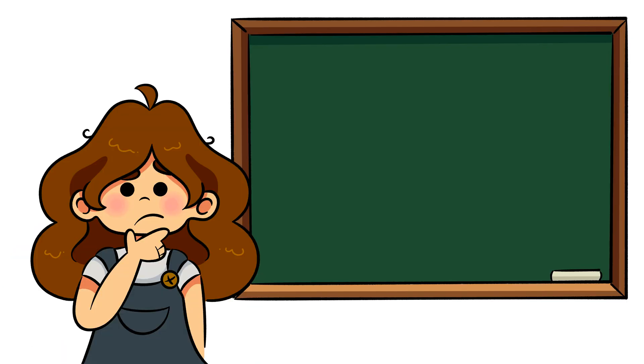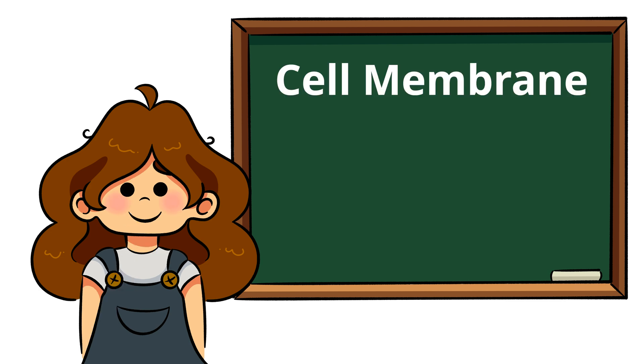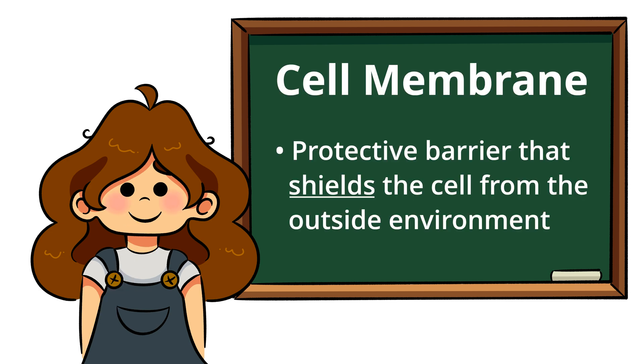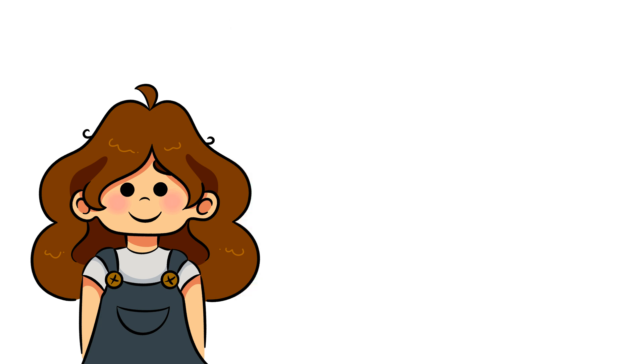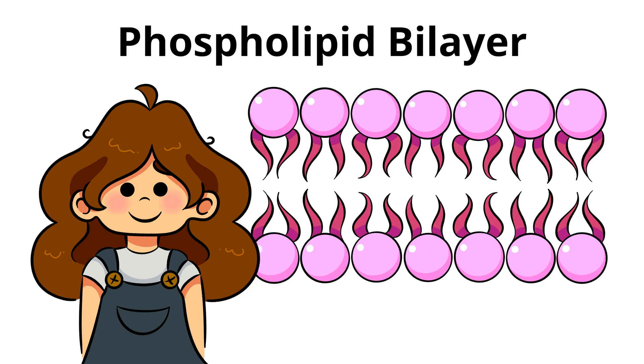Cool! So, what is a membrane? The cell membrane is a protective barrier that shields the inner part of a cell from its outside environment. Cell membranes are made up of something called a phospholipid bilayer, which is basically a double layer of fat molecules, also called lipids.